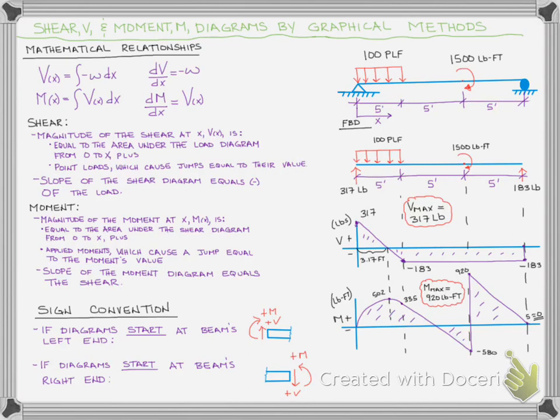If we were to start drawing our shear and moment diagram from the right end of our beam where we have the roller, then any sheers going down would be drawn positive, and any moments going counterclockwise would be drawn positive. The nice thing is if you stick to this convention, it doesn't matter whether you draw from the left or the right side — your shear and moment diagrams should look identical.